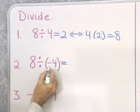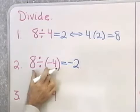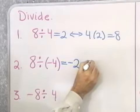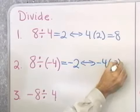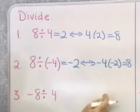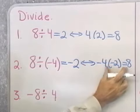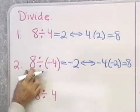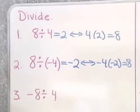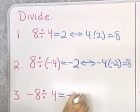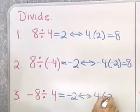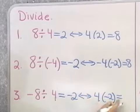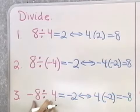Now, 8 divided by negative 4 is going to be negative 2, because the two numbers have different signs. To justify that, negative 4 times negative 2 is, in fact, positive 8. So negative 4 times negative 2 is the reason why 8 divided by negative 4 is negative 2. Negative 8 divided by 4 is negative 2, and the associated multiplication problem is 4 times negative 2, which is negative 8. So it does work.